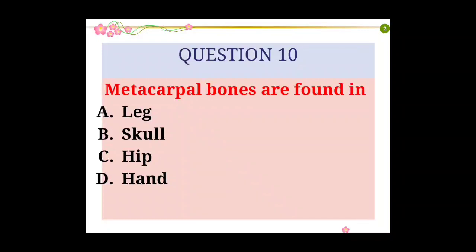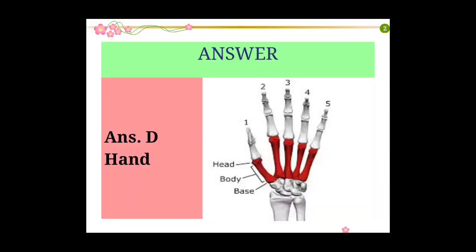Question number 10: Metacarpal bones are found in. Options: Leg, Skull, Hip, Hand. Answer: Hand. Metacarpal bones form the intermediate part of the hand.